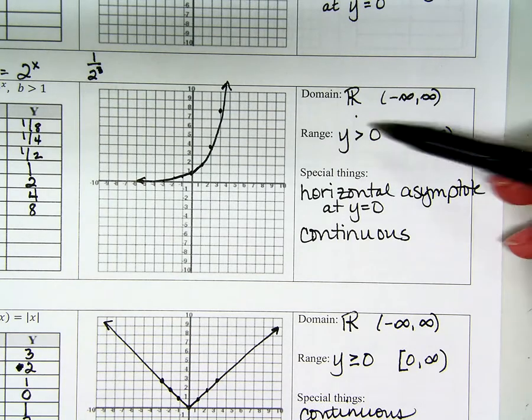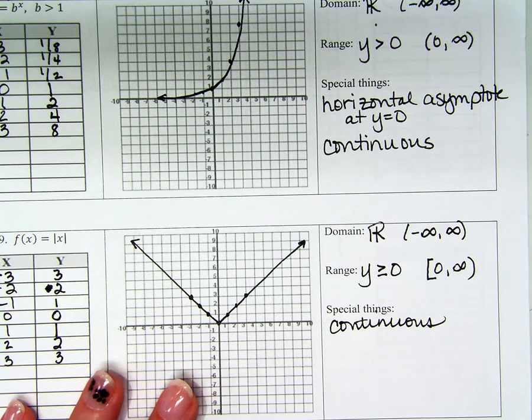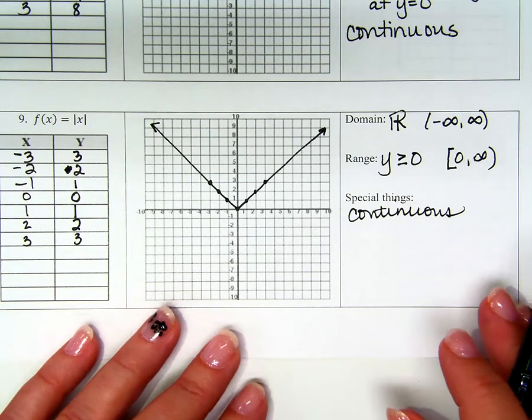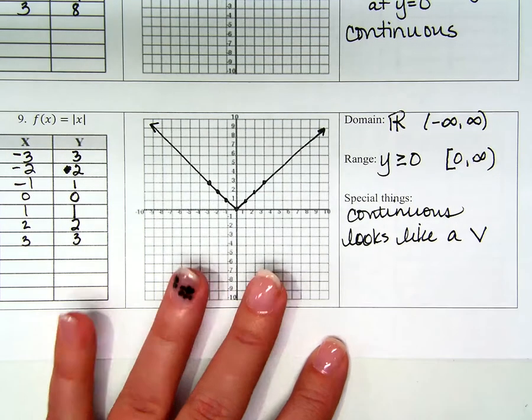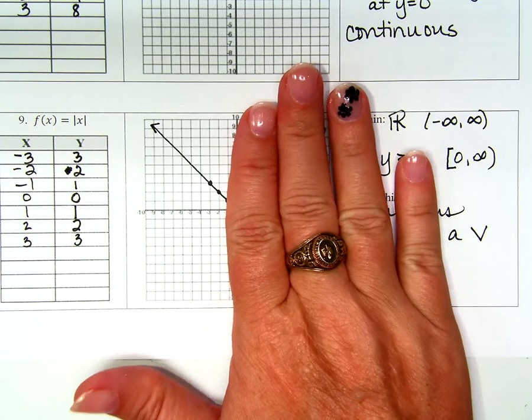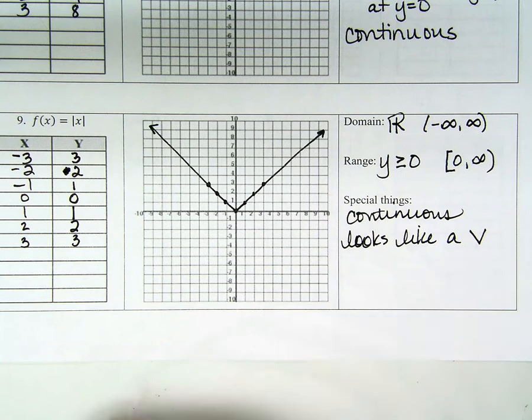So it's a bracket 0 infinity. Not like these ones up here because these ones up here, it never gets to 0. Right here, it is at 0 right there, isn't it? Any questions about that? Anything else on special things? It looks like a V. So on special things, can I write that it's linear? Is this half linear? Is this half linear? Is this half linear? Is it a linear function? No, it's not, is it? Silly. Any questions so far?